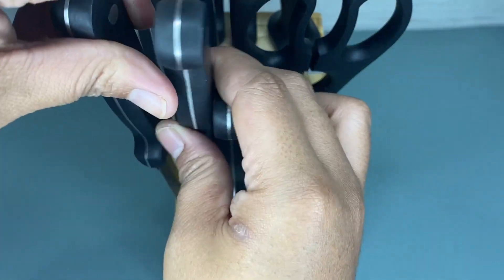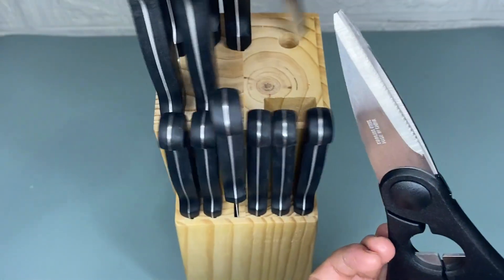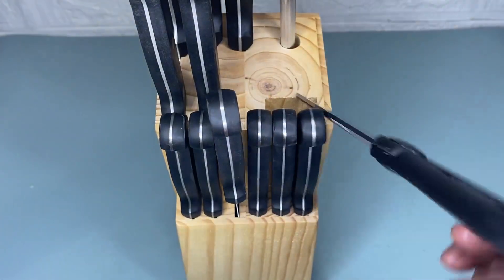And we also have here scissors and a pine wood block and sharpener. So as you can see, the blades of these knives are all made of stainless steel.